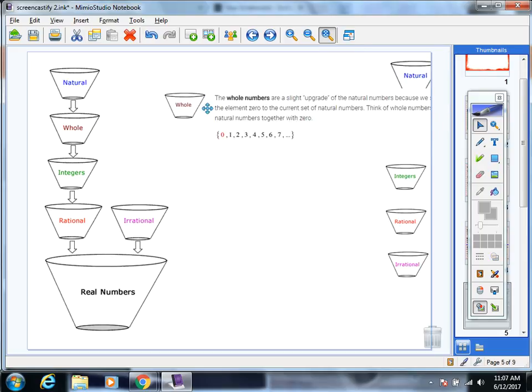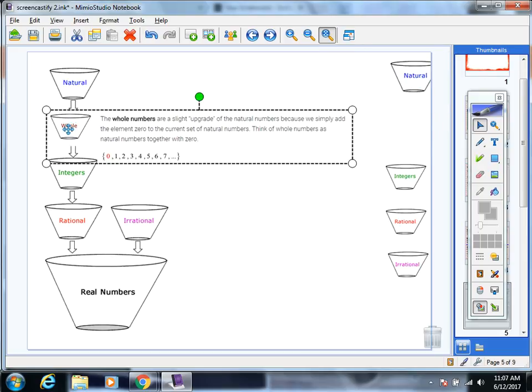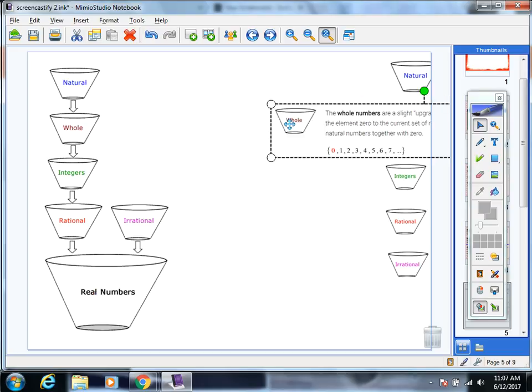If I started with a whole number, 0, then 0 would be whole, integer, rational, real. Simply adding 0 to the set of natural numbers.